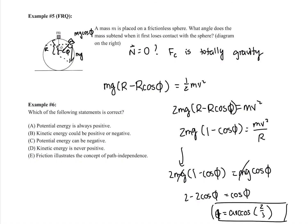Problem 6: which statement is correct? Potential energy is always positive — false, it can be negative depending on reference position. Kinetic energy can be positive or negative — false, since we use speed, it must be non-negative. Potential energy can be negative — yes, correct, for example if below the reference position for gravity. Kinetic energy is never positive — obviously wrong. Friction illustrates path independence — no, because friction is not a conservative force; path independence only applies to conservative forces. The correct answer is C.